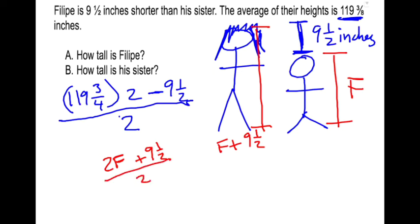Divide by two equals 119 three-eighths. That's how an average works, right? So two times Philippe's height plus the extra height for his sister, divide by two gives us our average.